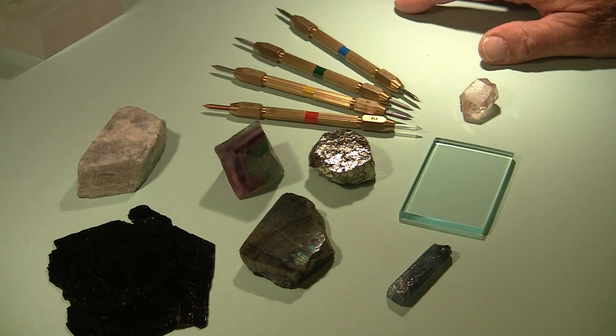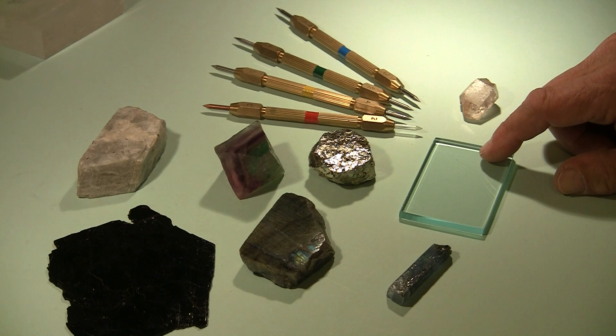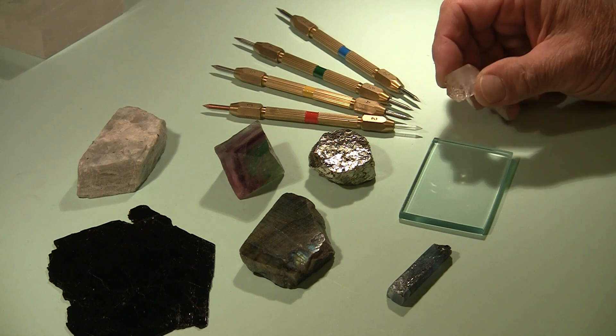In doing a hardness test, it's often very useful to start off with glass. Glass at a hardness of 5.5 is kind of in the middle of the hardness scale, so testing an unknown mineral on it divides it into two parts.